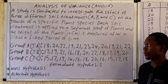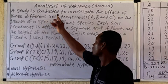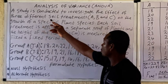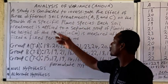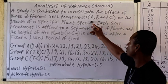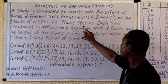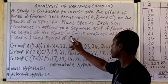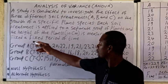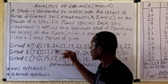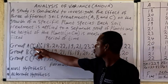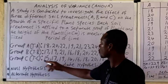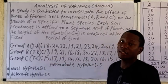We are going to attempt this question. A study is conducted to investigate the effect of three different soil treatments — treatments A, B, and C — on the growth of a specific plant species. Each soil treatment is applied to a separate group of plants, and the height of the plant in centimeters is measured after a fixed period of time.